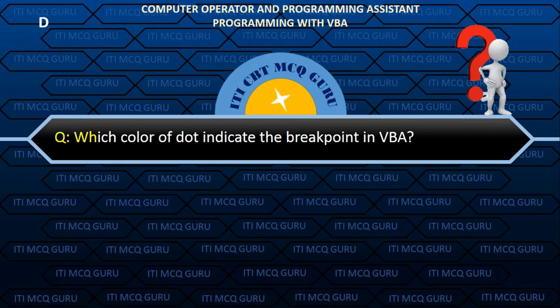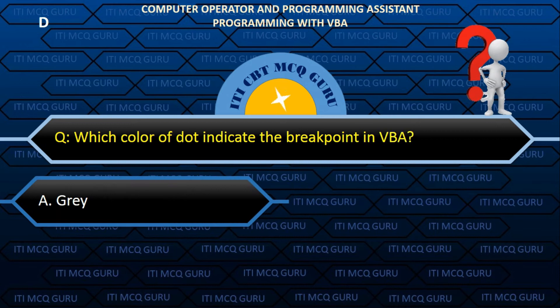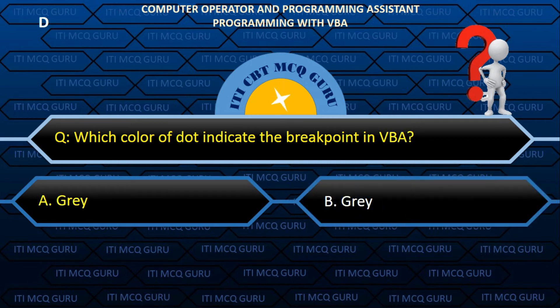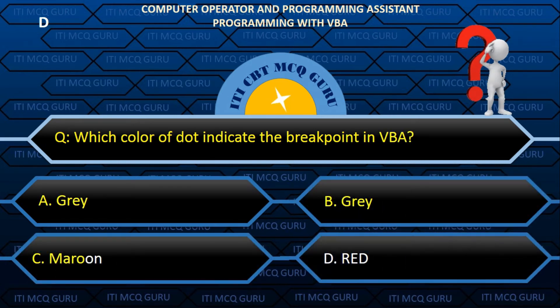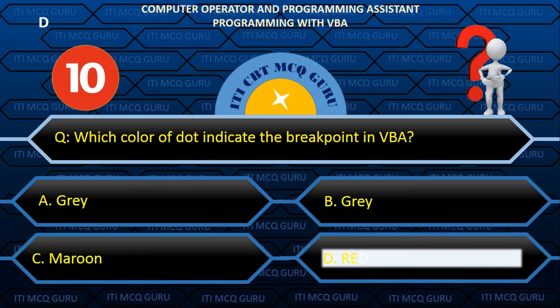Which color dot indicates the breakpoint in VBA? Answer: D. RED.